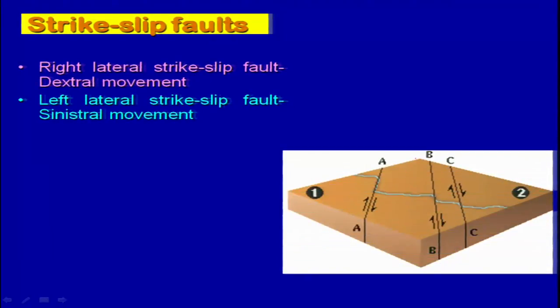Just to give a brief idea: right lateral strike-slip fault is also termed dextral, and left lateral strike-slip fault is called sinistral movement. Here it is shown that if you have the right block moving towards your side, irrespective of where you are standing — if you are looking from this place it will be right lateral, and if you are looking from this place it will also be right lateral. So faults A, B, and C shown here are all right lateral strike-slip faults.